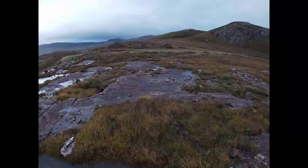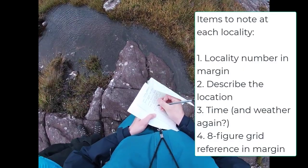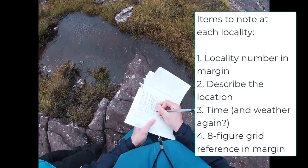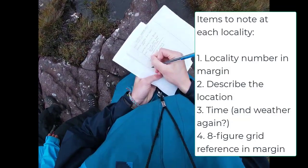Now let's start this locality. We start by describing where we are — thinking about the fact that we're on these large, flat slabs of brownish rock. We want a brief location description for each locality, and of course we will have a locality number that goes in the margin. It is currently 10:17am, so I'm going to write that in the margin.